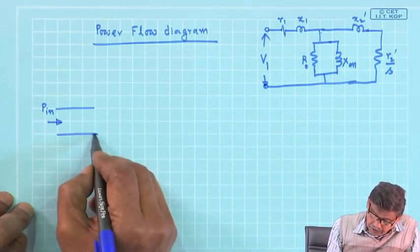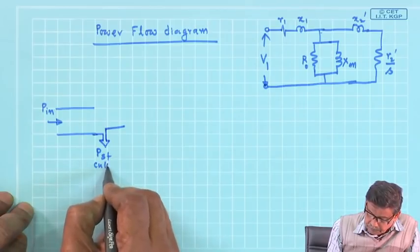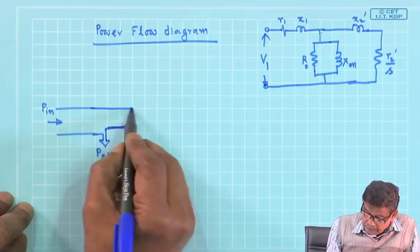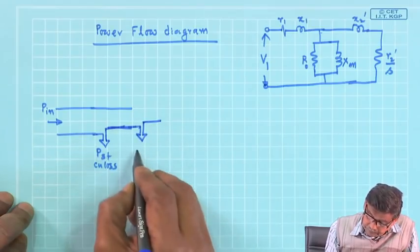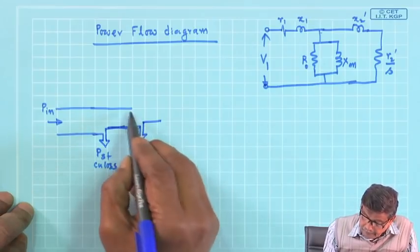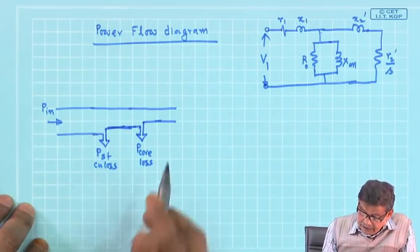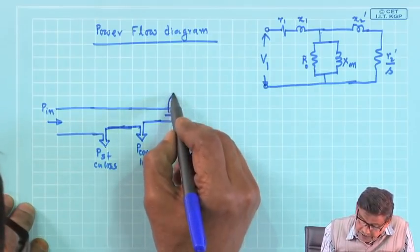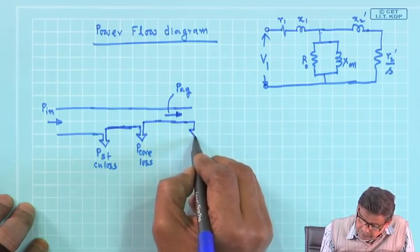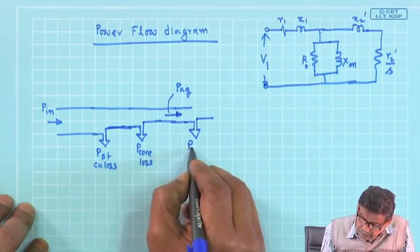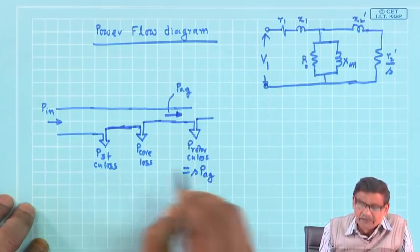First, subtract the stator copper loss. Then subtract the core loss. Whatever power remains after subtracting all stator losses is the air gap power PAG. From air gap power, subtract the rotor copper loss, which is always S times PAG.